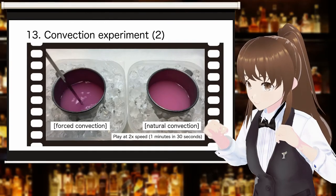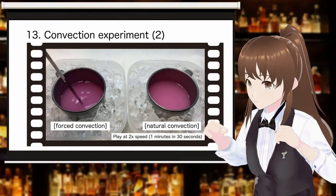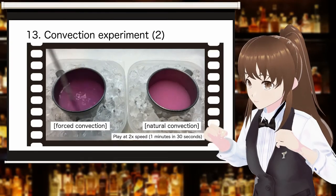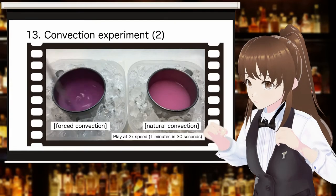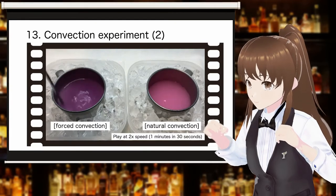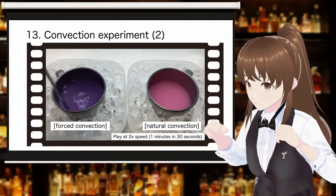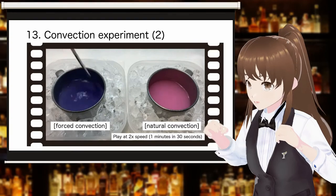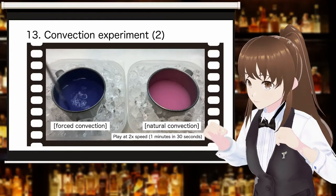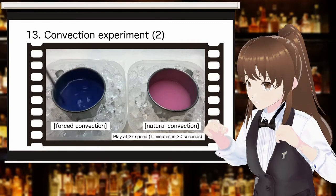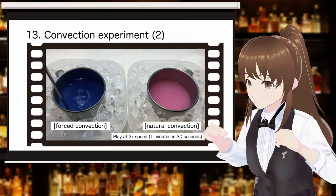Let us confirm the difference in heat transfer in convection due to the difference in flow velocity by experiment. Thermo-ink is put in a mug, and the outside of the mug is packed with ice to cool the thermo-ink from the outside. The right side shows natural convection with slow velocity. On the left side, stirring with a bar spoon generates forced convection with high velocity flow. It can be confirmed that the color of the thermo-ink changes from pink to blue quickly because heat transfer due to convection is greater in the mug on the left, where the flow velocity is faster.